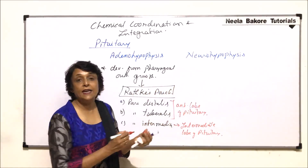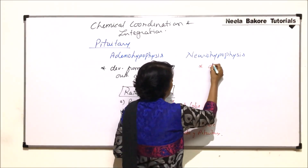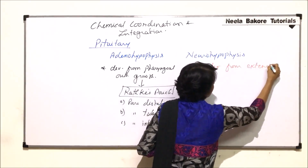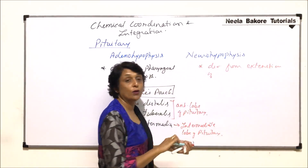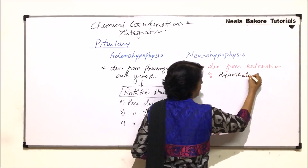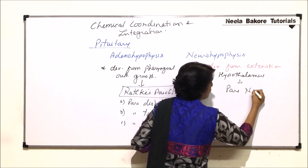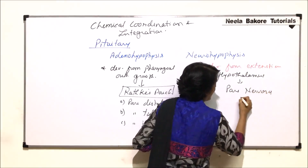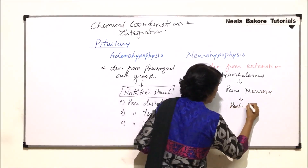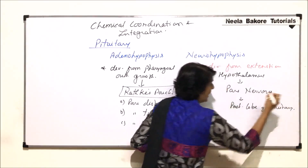Neurohypophysis is developed from an extension of the hypothalamus. This is known as pars nervosa. Pars nervosa gives rise to the posterior lobe of the pituitary.